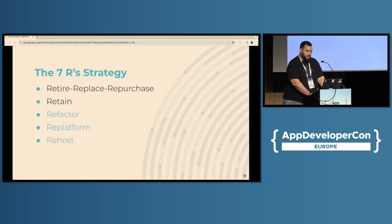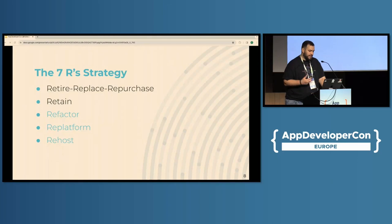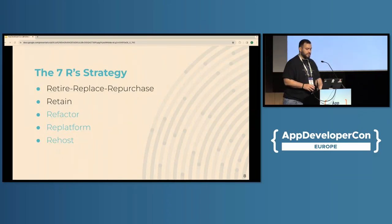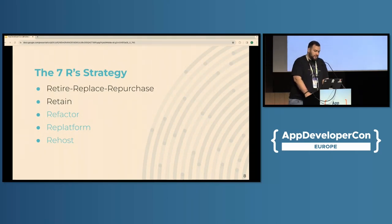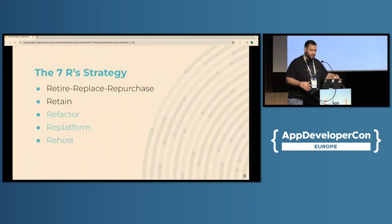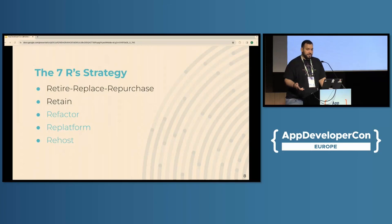The seven R's is a great way to start exploring the options we have as to how we can modernize a service. Retiring, replacing, and repurchasing are used more to address third-party services, so we're not going to be addressing those a lot. Retaining means doing nothing about it, so obviously I couldn't do a whole presentation about doing nothing. We'll be focusing more on refactoring, re-platforming, and re-hosting.